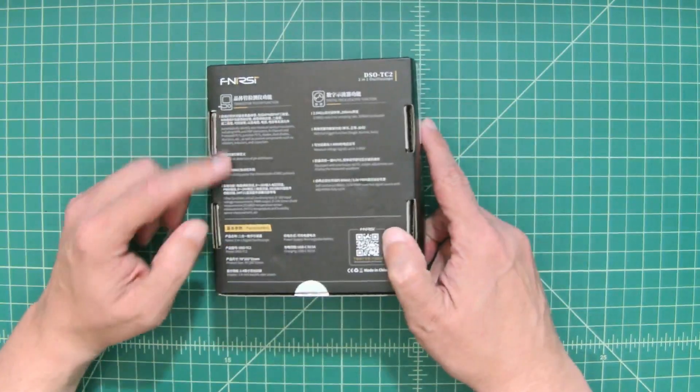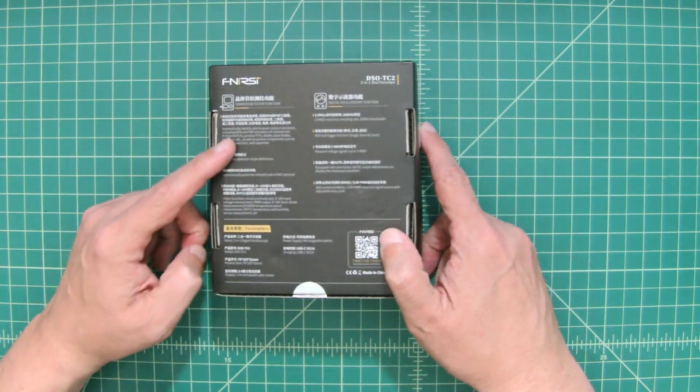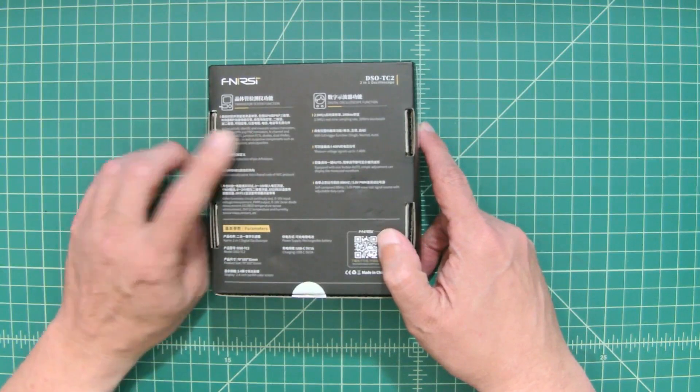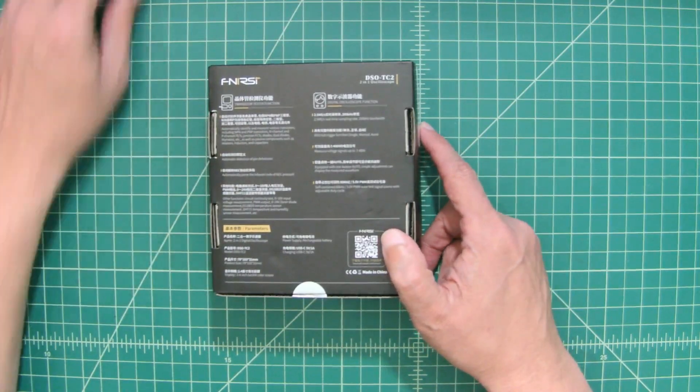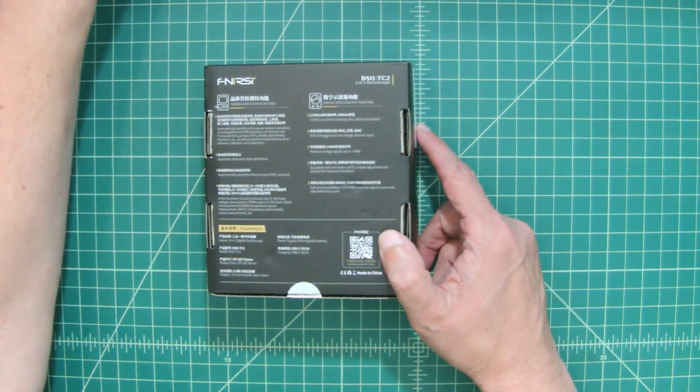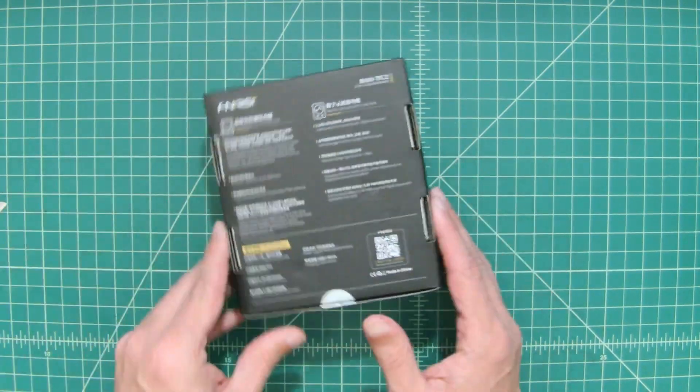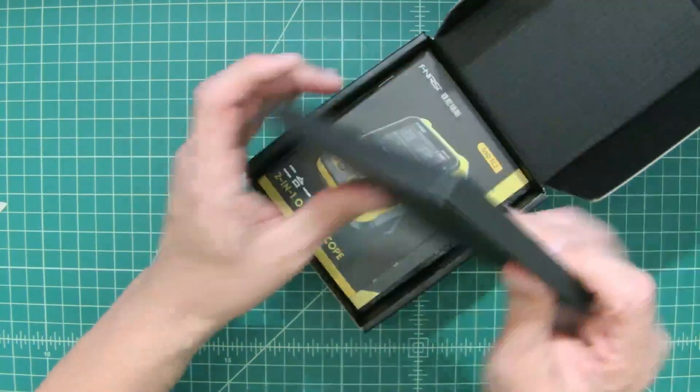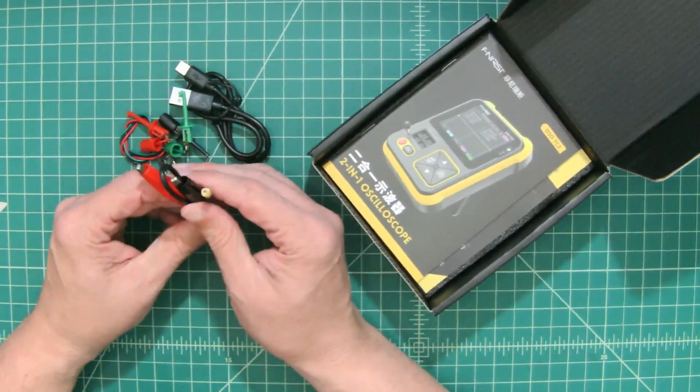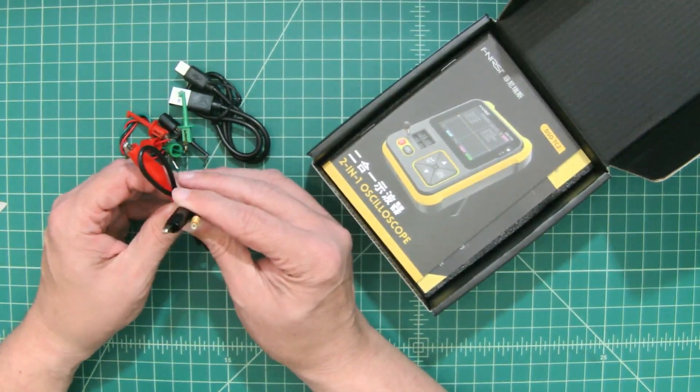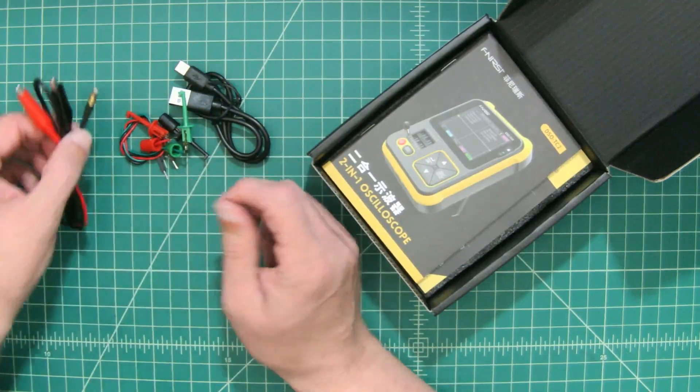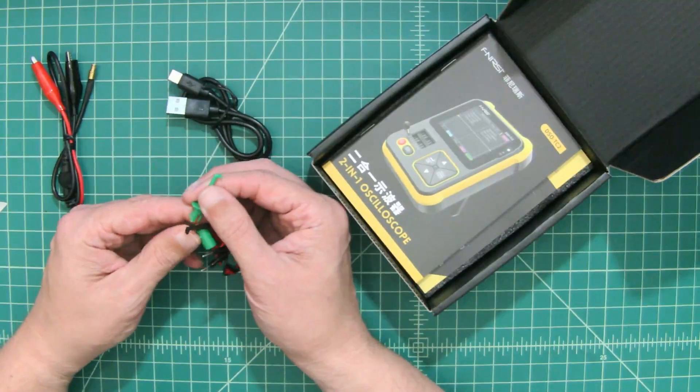I did want to mention this says DSO, which is Digital Storage Oscilloscope-TC2 is the model number. There is a device called a TC1, which is a component tester that does not include the oscilloscope. I'll include links below where you can pick this up and check out further details on the stats. Let's get in here and see what's inside.